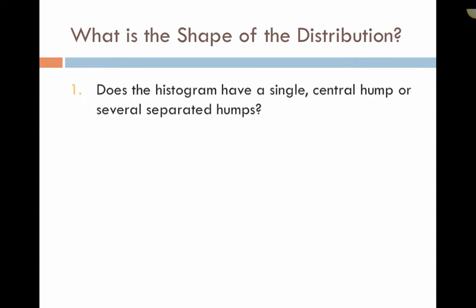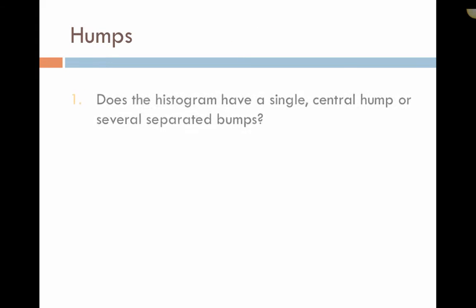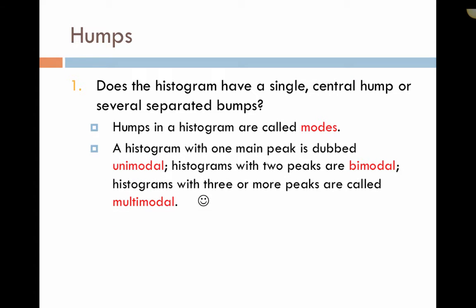Starting with the shape of the distribution, we want to look: does the histogram have a single central hump or several separated humps? Is the histogram symmetric? And do any unusual features stick out? The humps of a histogram are called modes. A histogram with one main peak is called unimodal. If there are two main peaks, it is bimodal. And if there are three peaks, it is multimodal because statisticians don't count past two. Just kidding.